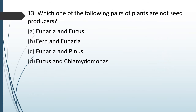Question No. 81: Which one of the following pair of plants are not seed producers? Option A: Funaria and Fucus. Option B: Fern and Funaria. Option C: Funaria and Pinus. Option D: Fucus and Chlamydomonas. The correct answer is Option B — Fern and Funaria.